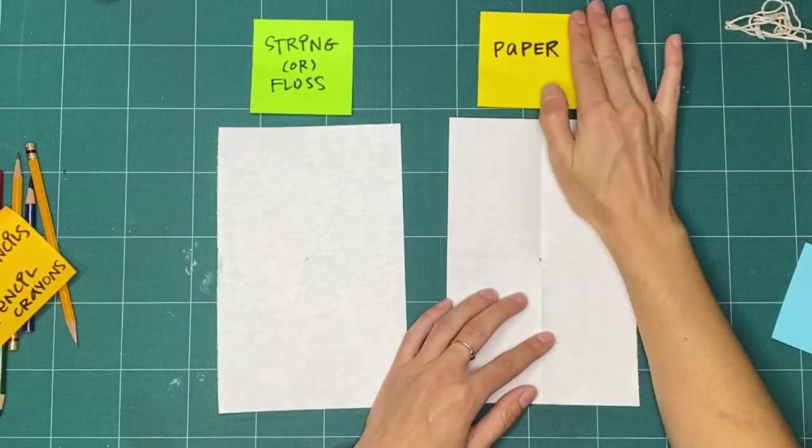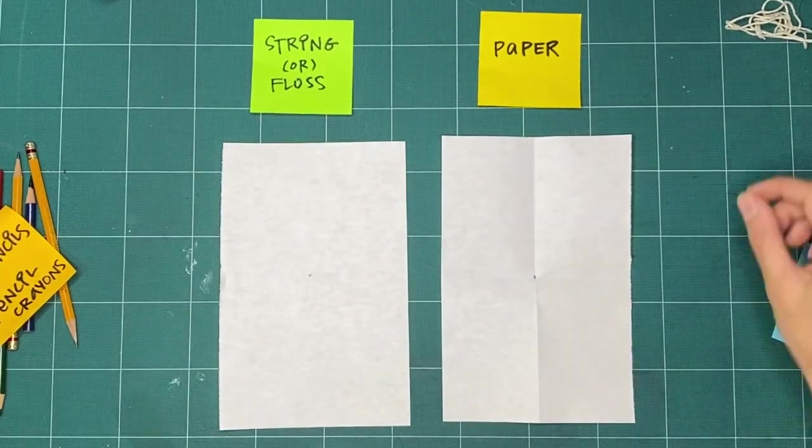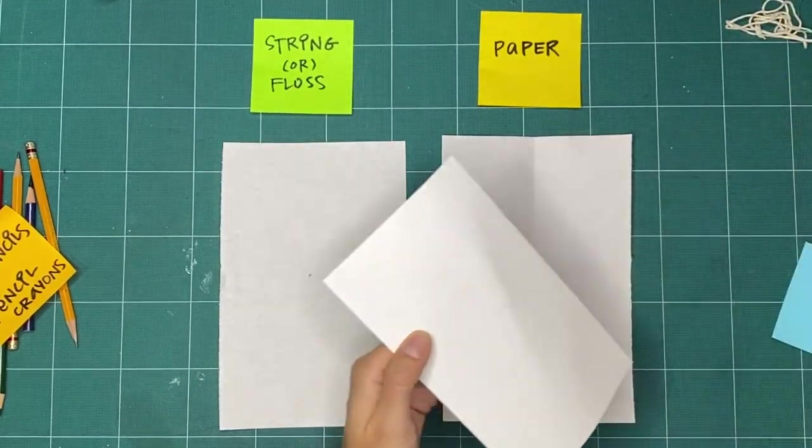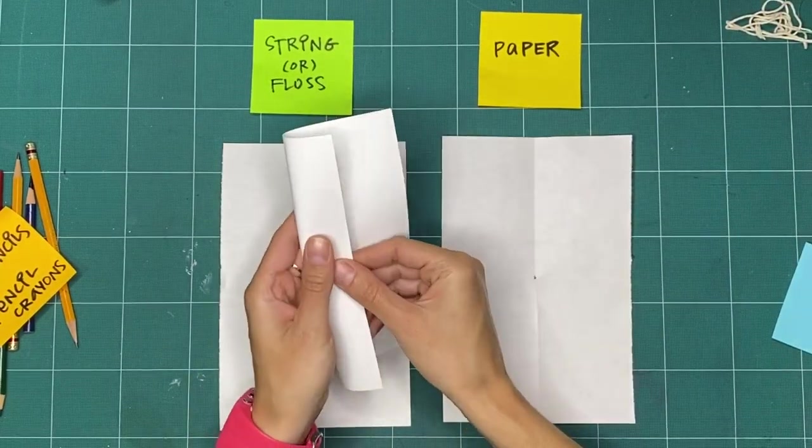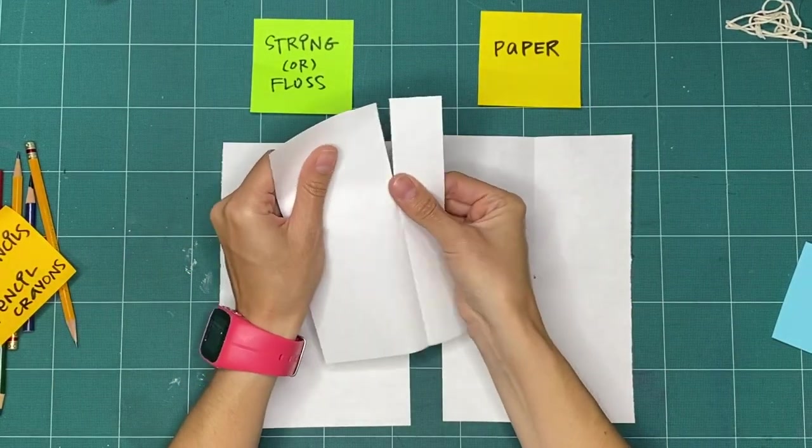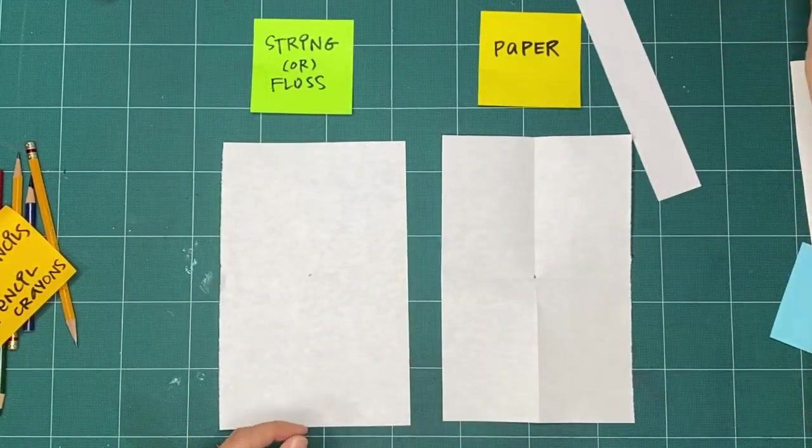I'm going to show you a way to make a circle using a piece of string and some tape, and a way to make a circle with another piece of paper and two pencils. For the paper, I'm going to cut it down a little thinner so it acts like another piece of string.